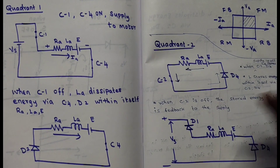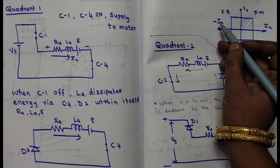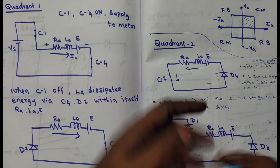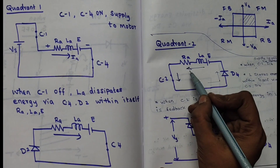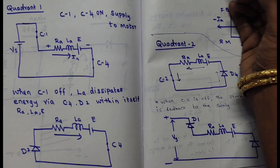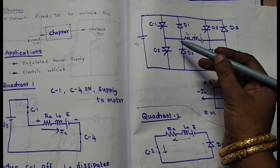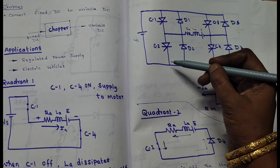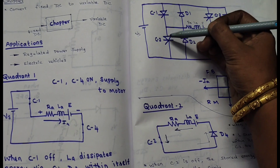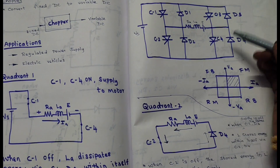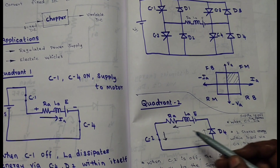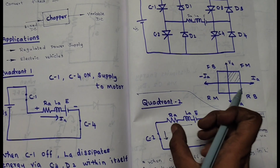In quadrant 2, the current direction is negative — it flows in the opposite direction compared to quadrant 1. To allow this negative current to flow and store energy in the inductor, switches C2 and diode D4 come into operation. The motor operating as a generator converts mechanical movement and stores energy in the inductor via C2 and D4.